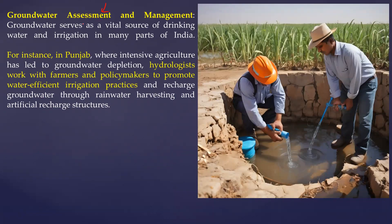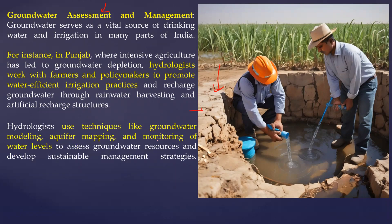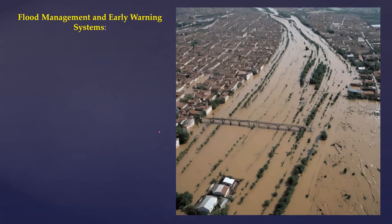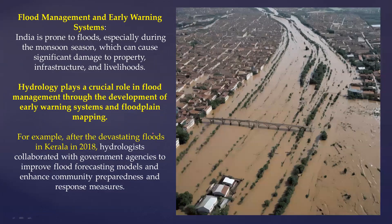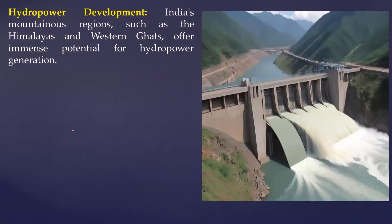The next scope is groundwater assessment and management. In several places in India groundwater levels are going down and depleting — especially for farmers in Punjab, where problems of soil salinization and depleting groundwater are making irrigation unsustainable. Hydrologists use different techniques for mapping, modeling, and aquifer mapping to help in better planning. Additionally, hydrology plays a crucial role in flood management, early warning systems, and flood plain mapping — as seen in the devastating 2018 Kerala floods, where hydrologists collaborated with government agencies to improve flood forecasting models and preparedness measures.